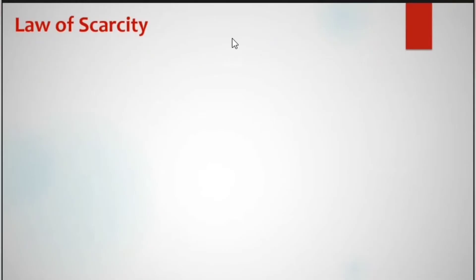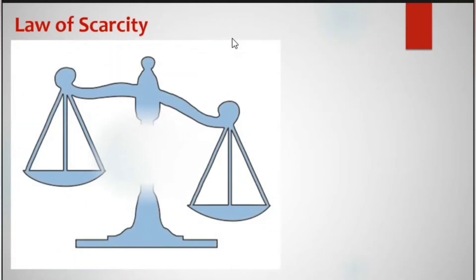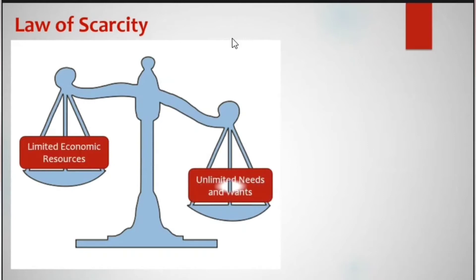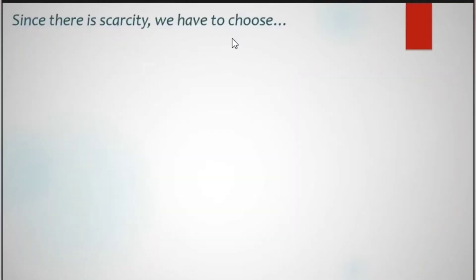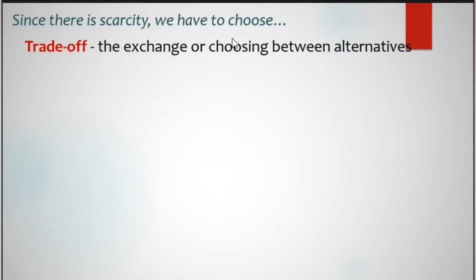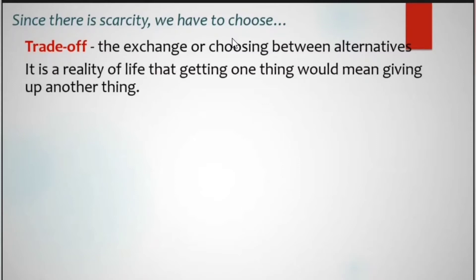In economics, we have what we call the law of scarcity — the needs and wants of people are greater than the available resources. The law of scarcity means an economic system cannot produce all goods and services that consumers want, and most consumers do not have the resources to purchase everything they want. As a result of scarcity, we have trade-off. Trade-off is the exchange or choosing between alternatives — it is a reality of life that getting one thing would mean giving up another thing.